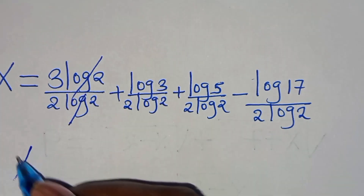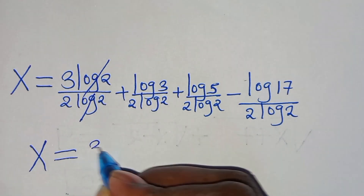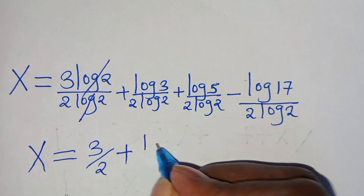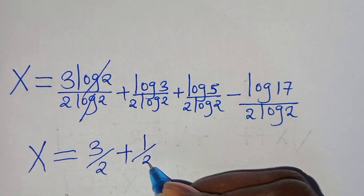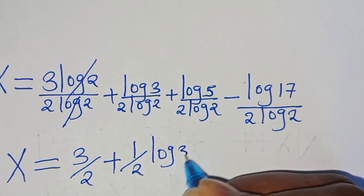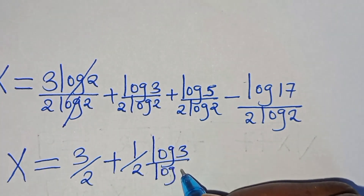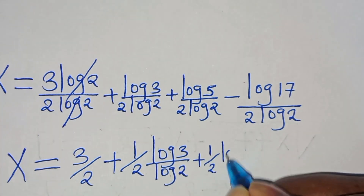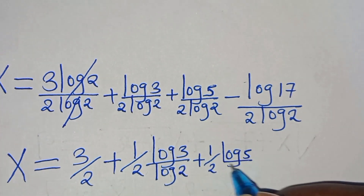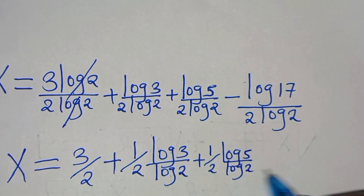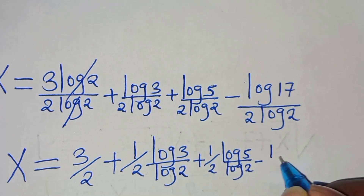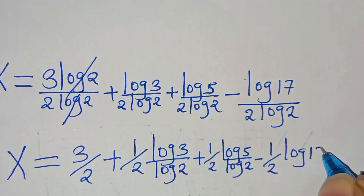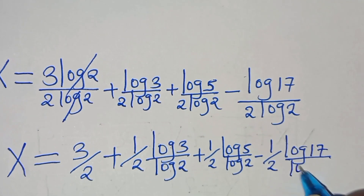Let's simplify: log 2 over log 2 cancels, giving 3 over 2 for the first term. The remaining terms each have a factor of one half: one half times log 3 over log 2, plus one half times log 5 over log 2, subtract one half times log 17 over log 2.